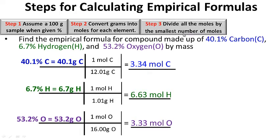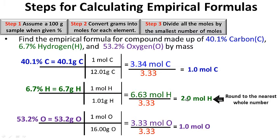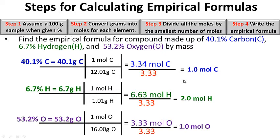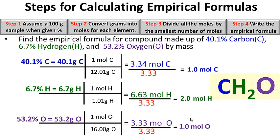Step three: divide all the moles by the smallest number of moles. The smallest here is 3.33. Dividing gives us 1 mole of carbon, 1.9 moles of hydrogen, and 1 mole of oxygen. It's important to round 1.9 to the nearest whole number, which becomes 2. Step four: write the empirical formula. We have 1 carbon, 2 hydrogen, and 1 oxygen. The empirical formula is CH2O.